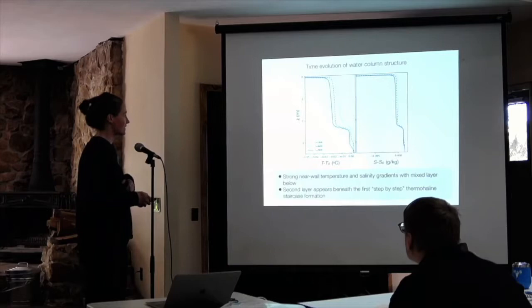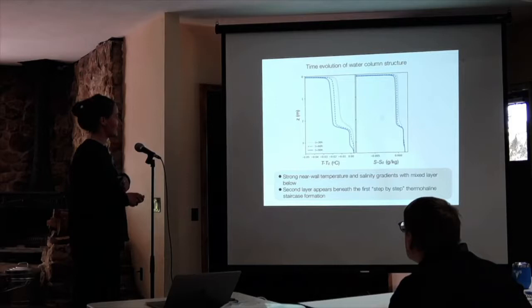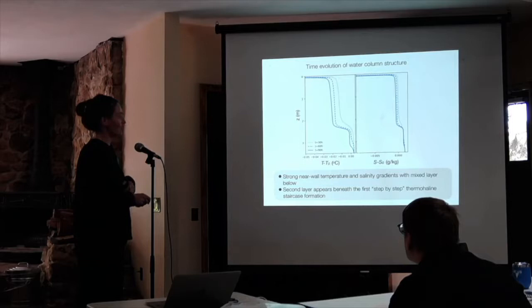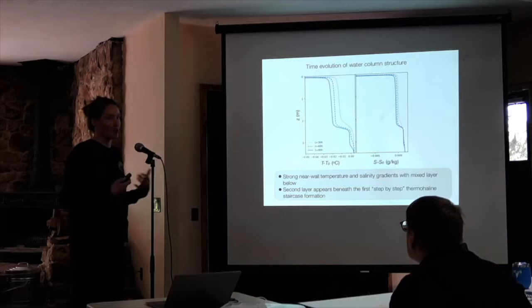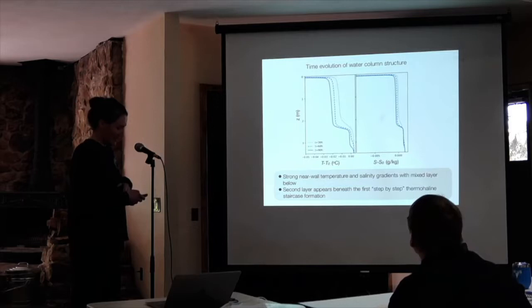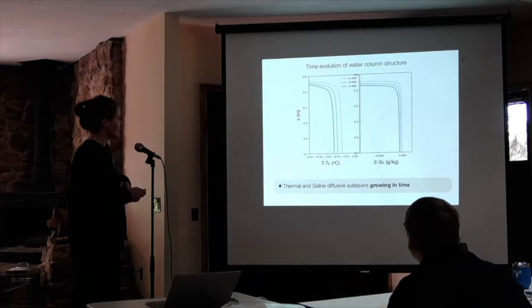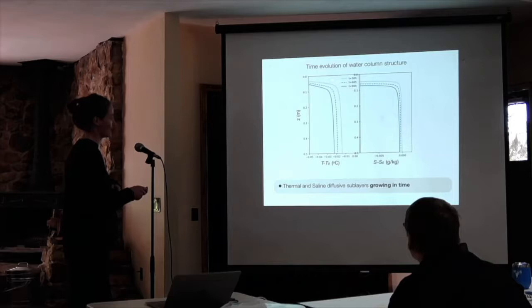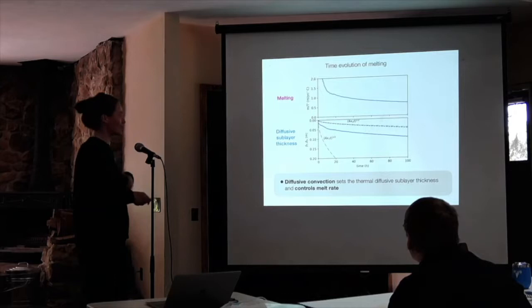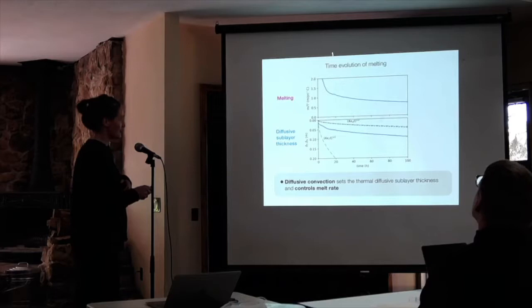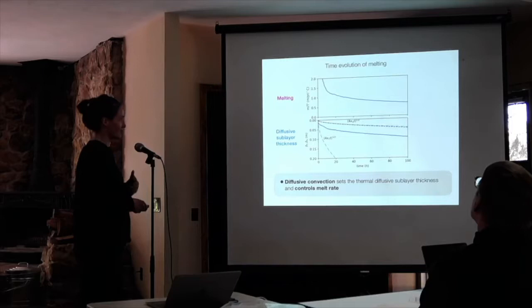So the mixed layer depth and properties are both in control of and determined by melting. Looking more closely at the water column structure — showing three profiles 30 hours apart — you can see an initial deep mixed layer, and as time progresses we're forming a second mixed layer beneath it. This is the evolution of our thermohaline staircase in a step-by-step layer formation way. If I zoom into the very top of this plot, the diffusive sublayer is also growing in thickness over time, providing a control on how the melt rate is evolving.